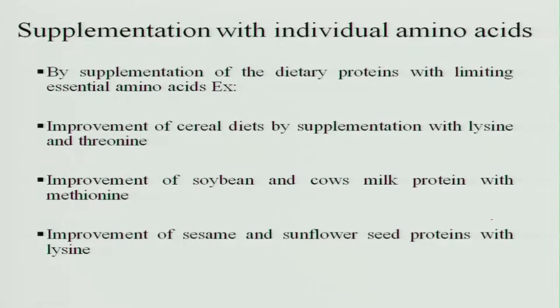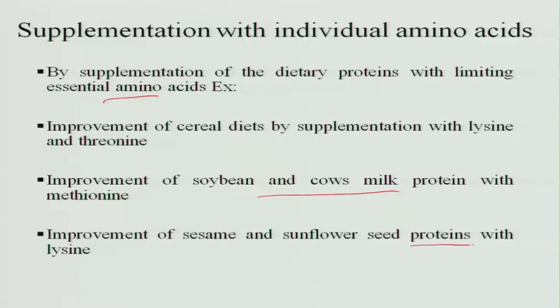Supplementation with individual amino acids involves supplementing dietary proteins with limiting amino acids. For example, improvement of cereal diets by supplementation with lysine and threonine — you do not have to add pulses; you just supplement with lysine and threonine and it becomes a complete protein. Similarly, soybean and cow's milk can be improved with methionine, since methionine is lacking in pulses — you just supplement methionine and it becomes a complete protein. Sesame seeds can be improved with lysine, since lysine is lacking in sesame seeds. Individual amino acid supplementation means supplying those specific amino acids separately, whereas mutual supplementation means adding two foods that mutually complement each other's amino acid profile.